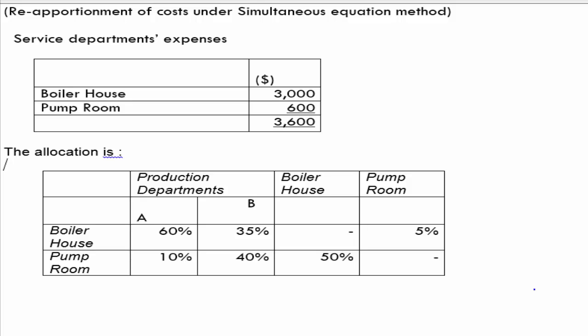In this session, we are going to understand how to apply a reciprocal services method. In the reciprocal services method, there may be service departments which exchange services — one service department providing service to the other and receiving service from that department. In such cases, we can apportion the overheads using three methods, and one of those methods is the simultaneous equation method. In this session, we are going to understand how to make use of this simultaneous equation method.